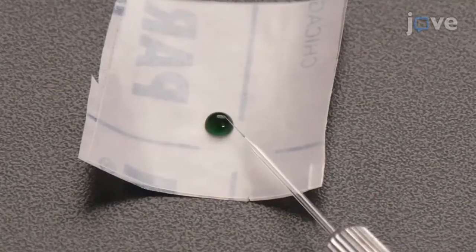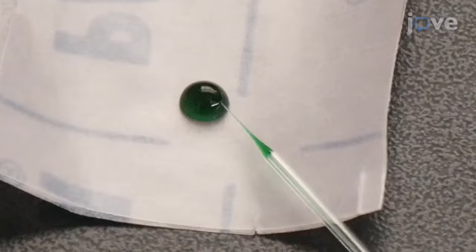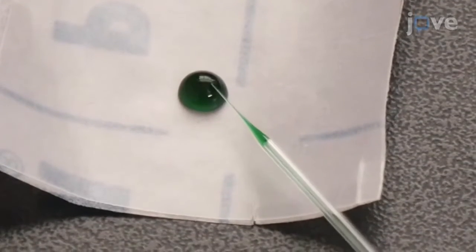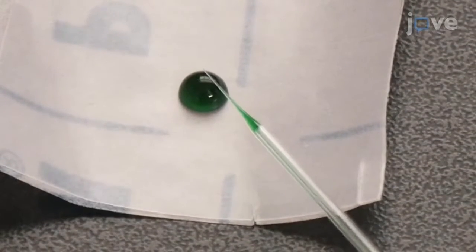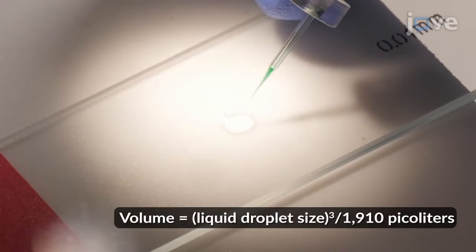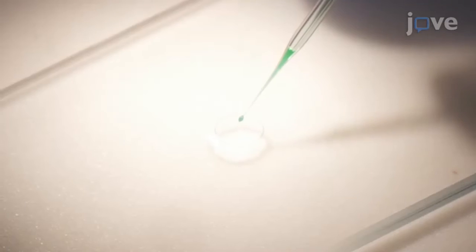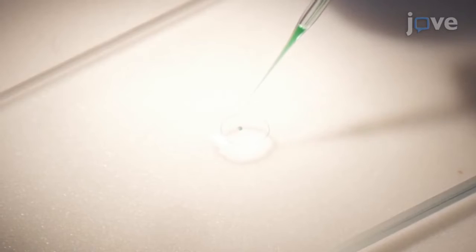To measure the volume of liquid that will be injected into each fly, load a capillary needle with sterile 5% food coloring in PBS, and expel the liquid onto a drop of mineral oil on a 0.01 mm stage micrometer.